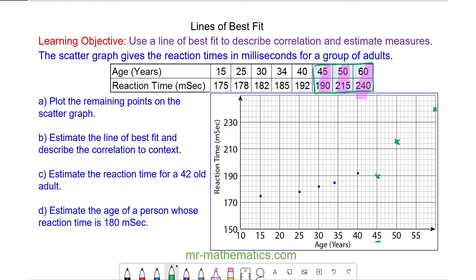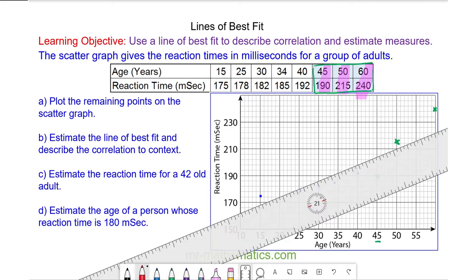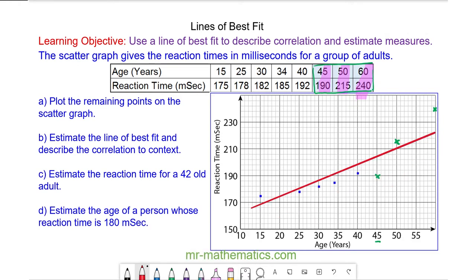Now we're going to estimate the line of best fit. It should show as many points above the data as it does below it, and it just shows the trend of the points.